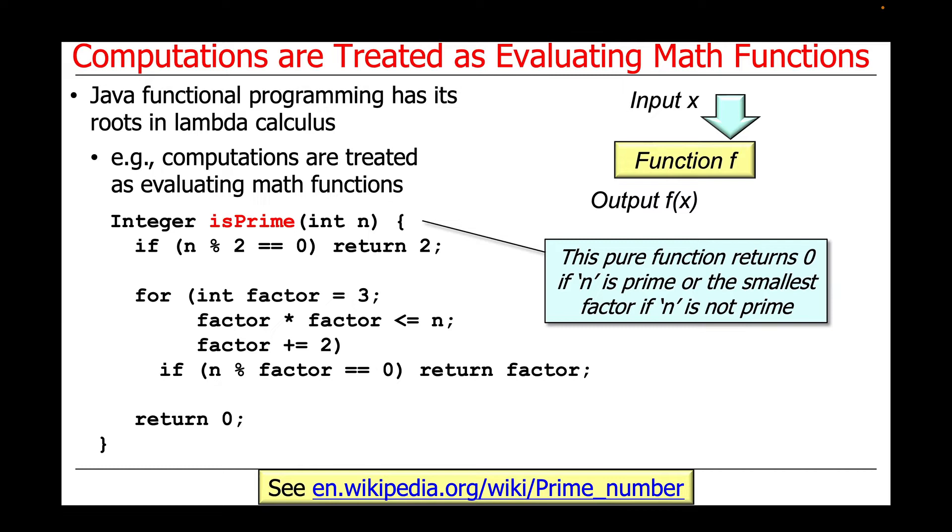A prime number is a natural number greater than one that's not the product of two smaller natural numbers. This isPrimePure function returns zero if its parameter n is prime or the smallest factor if n is not prime.